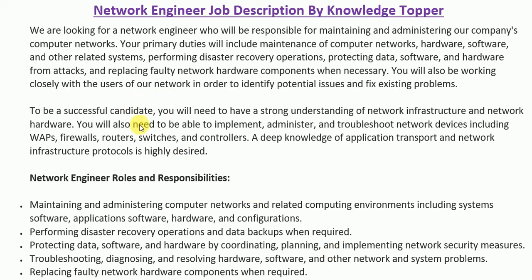As you can see on your screen, like every job description, it starts with an introductory paragraph called the job summary. It is generally a brief paragraph that states the particular job title the company is looking to hire for — in our scenario, a network engineer. It also mentions key roles, responsibilities, and important skills. This paragraph is essentially a summary of the whole job description.